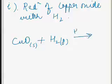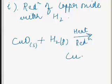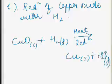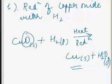When hydrogen gas is passed over heated copper oxide, it gets reduced to metallic copper and H2O in gaseous form. In this reaction, oxygen is removed from copper oxide, so this is a reduction reaction.